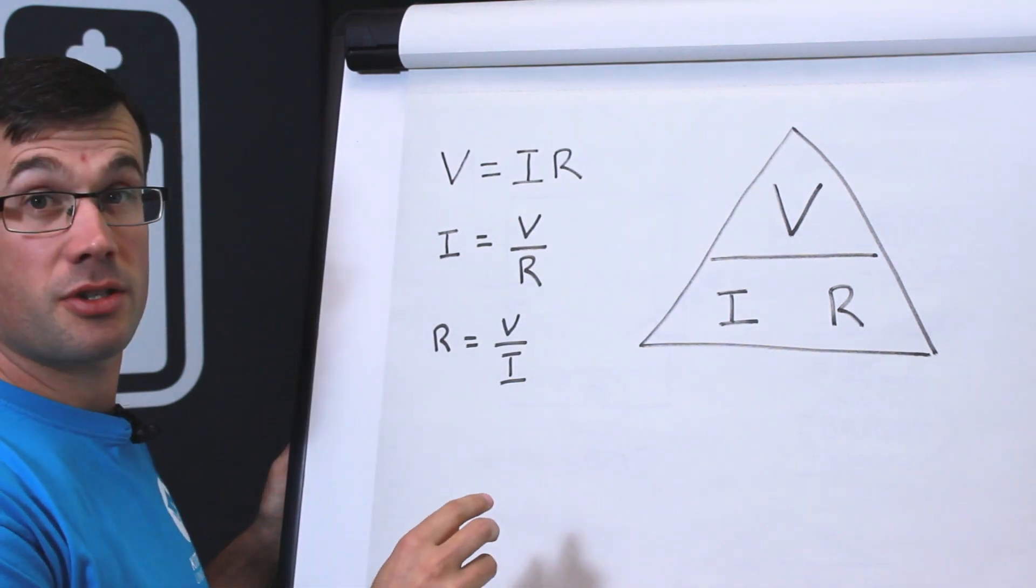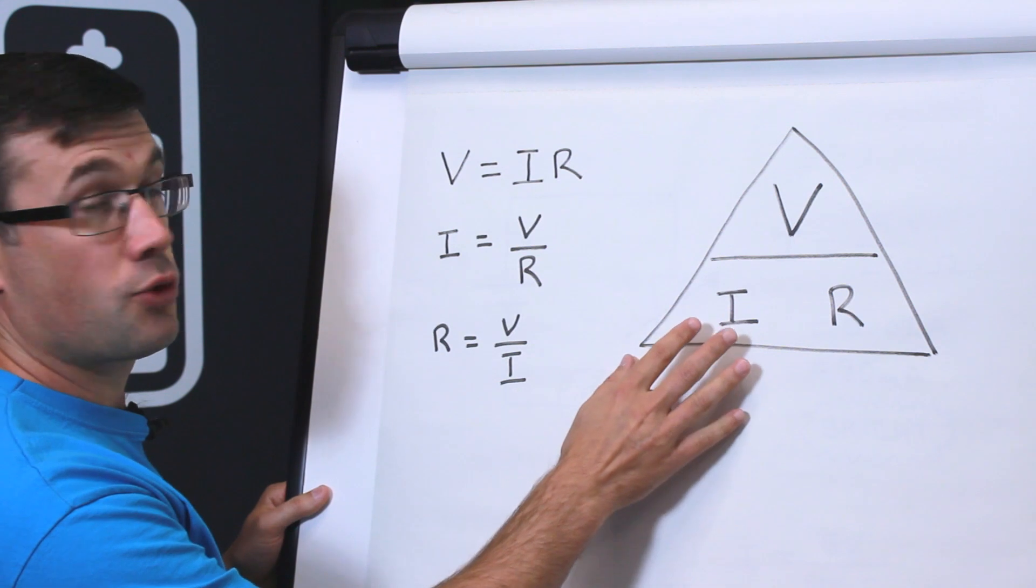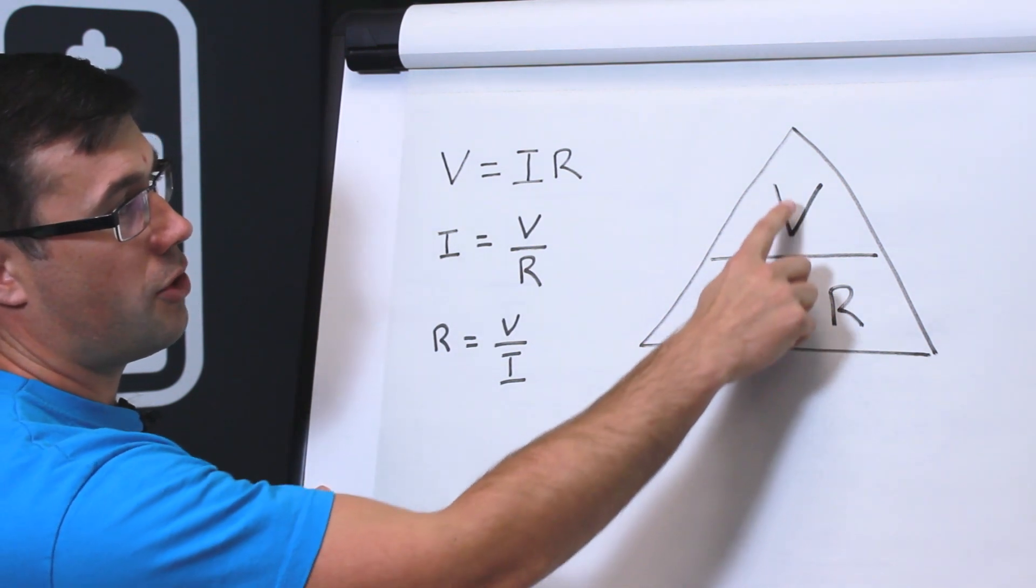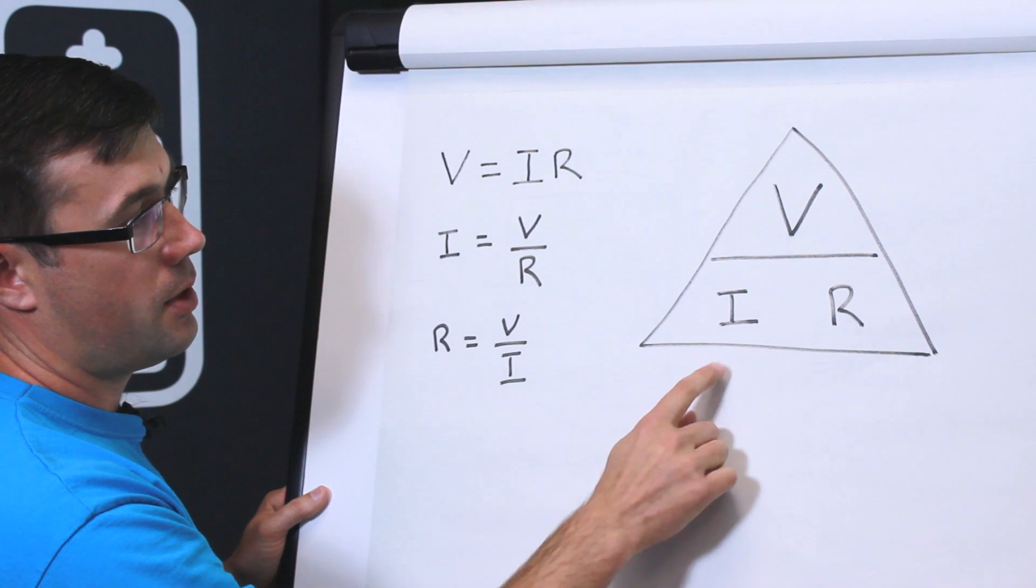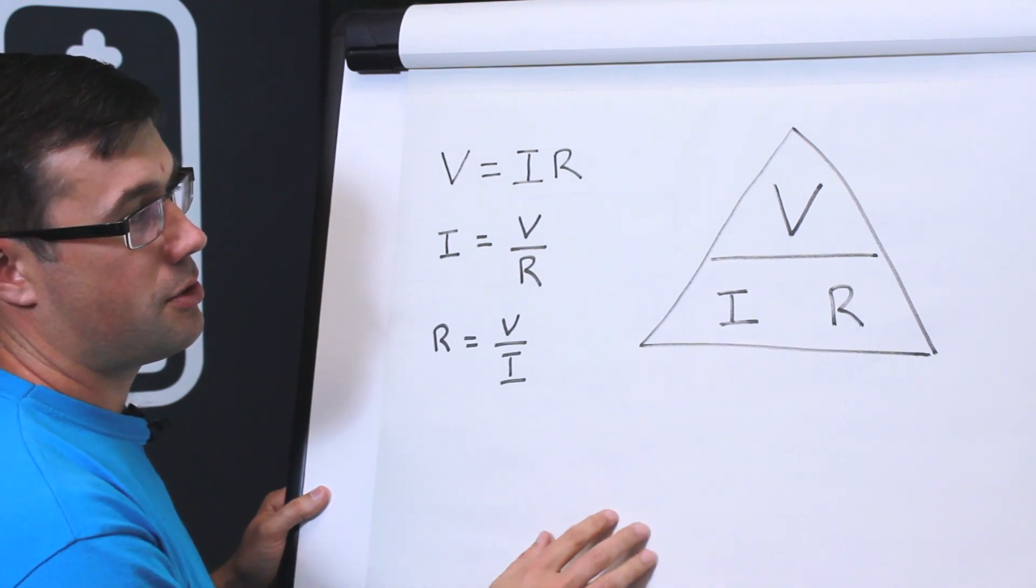But you now have to remember this algebra. We can use a simple triangle or pyramid instead. So we've got the voltage at the top and the current and the resistance at the bottom.